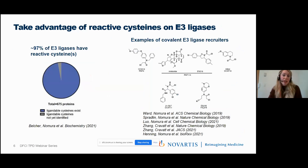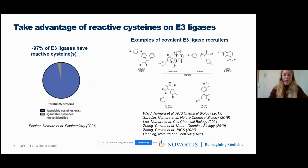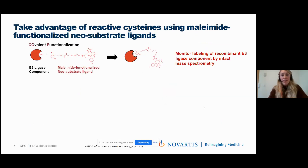Our goal was to use an untagged E3 ligase component without genetic manipulation or specific E3-binding ligands. We took advantage of the fact that the majority of E3 ligases contain reactive cysteines—as summarized by Nomura's lab, up to 97% of E3 ligases have reactive cysteines labelable with electrophiles. Rather than develop a specific covalent ligand per E3, we use a generic maleimide to label any E3 ligase with surface-exposed cysteines, performing the labeling on purified recombinant protein.